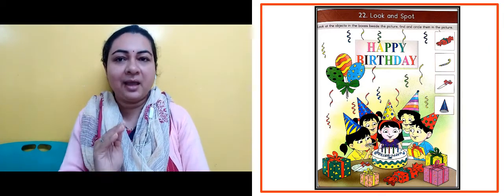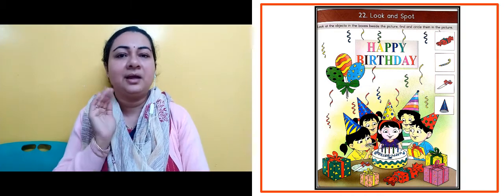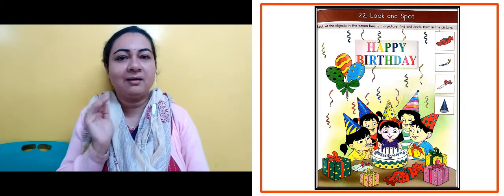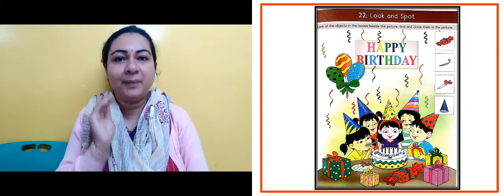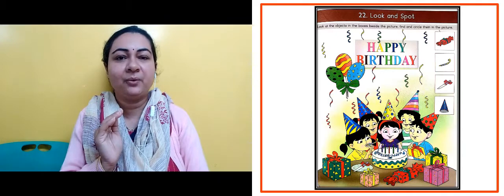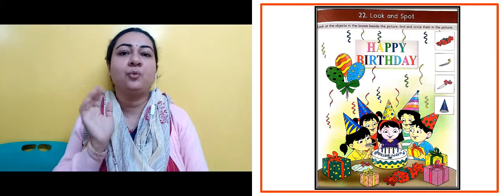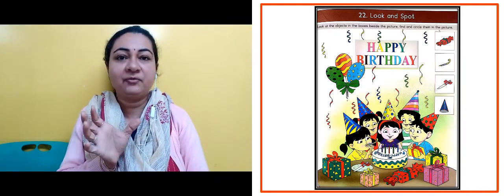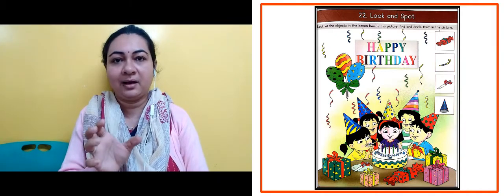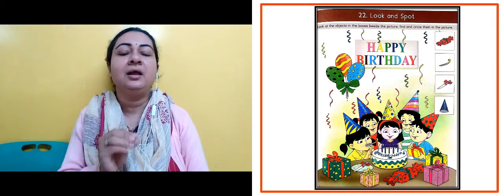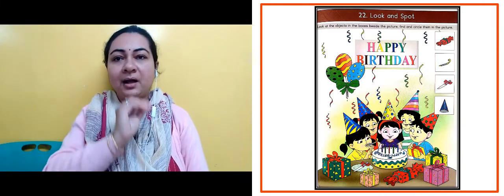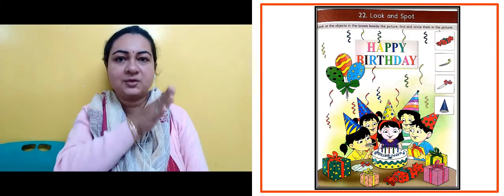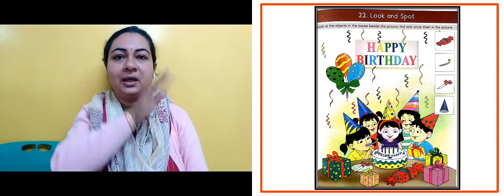There is a birthday cake, and there are children. A girl's birthday is being celebrated. A lot of gifts are also kept there — gift boxes are placed. Now if you look at the next side of it,